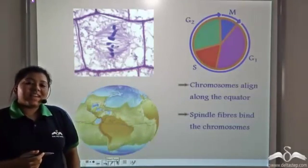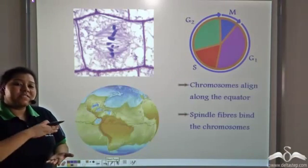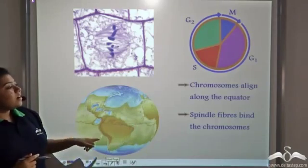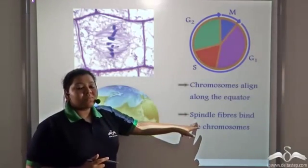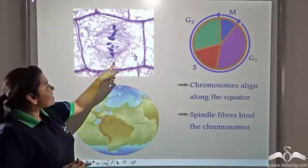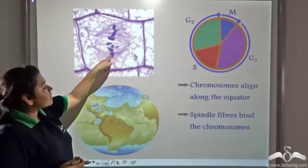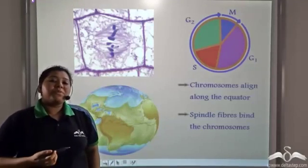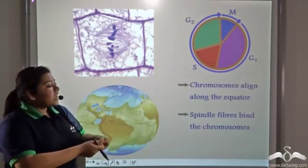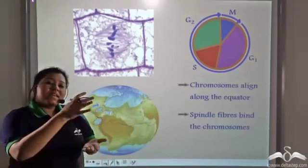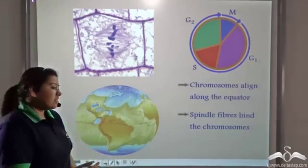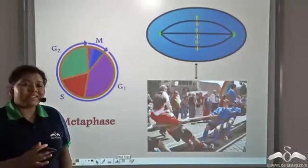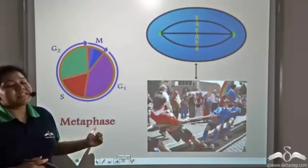Now just like the earth is divided horizontally into halves by the equator, all the chromosomes after the prophase align along the equator and the spindle fibers produced by the centrosomes bind the chromosomes in the equator. This phase is known as the metaphase, where meta means adjacent.